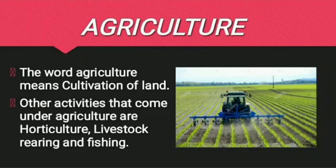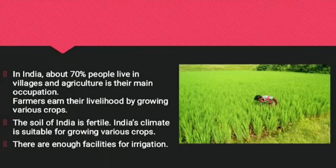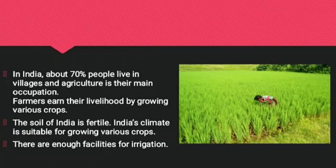Let's begin with agriculture, which means cultivation of land. Other activities that come under agriculture are horticulture, livestock rearing, and fishing. In India, about 70% of people live in villages and agriculture is the main occupation. Farmers earn their livelihood by growing different crops. The soil of India is fertile, and India's climate is suitable for growing crops. There are enough facilities for irrigation also.